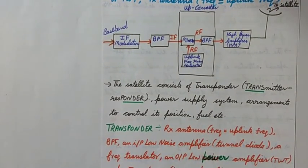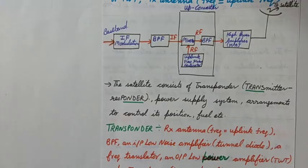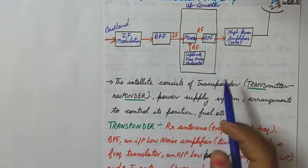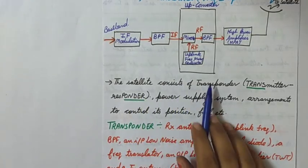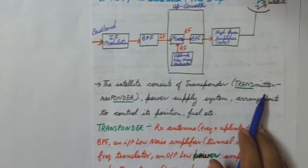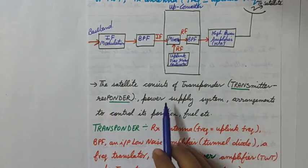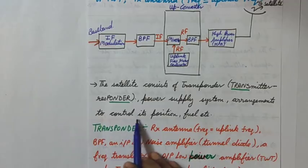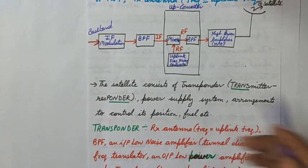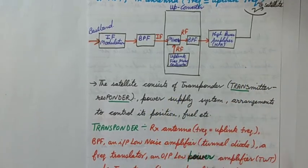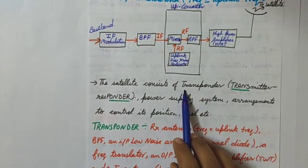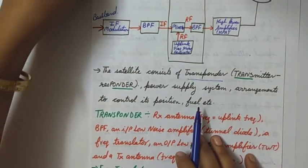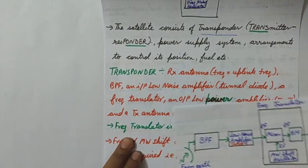I will give a separate video lecture on why the uplink frequency is higher than the downlink frequency, so watch that so you can answer correctly in the exam. Moving on — the satellite consists of a transponder. The name comes from 'transmitter' and 'responder.' The satellite also has a power supply system, usually from solar panels, plus arrangements to control its position and fuel. The main component from a communication standpoint is the transponder.